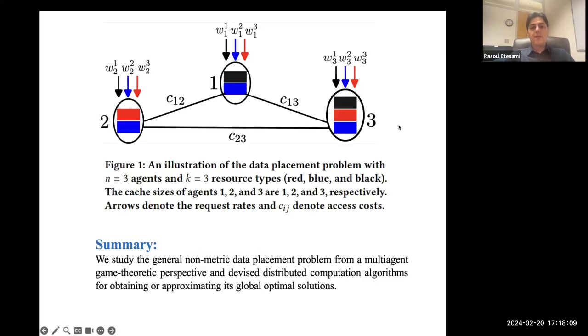So more specifically, we consider a set of agents. In this example, we have three agents. Each agent has a limited cache size, and there are several resources. Here we have three resources: black, blue, and red. And the request rates for each agent is denoted by a different arrow.